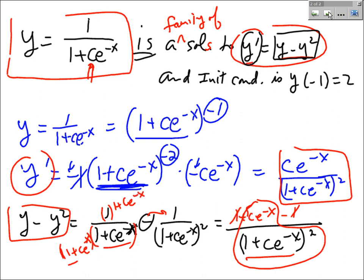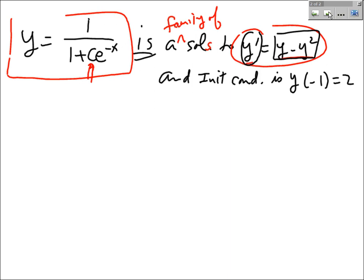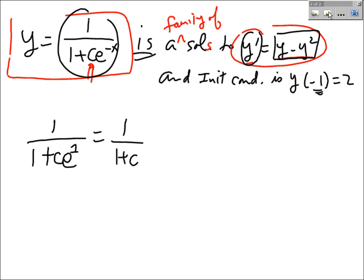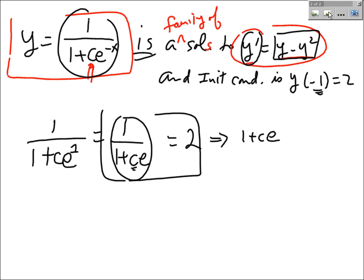When you have an initial value condition, you can usually find the value of c. Plugging in x equals negative 1: y of negative 1 equals 1 over (1 + c·e^(−(−1))) equals 1 over (1 + c·e). This is supposed to equal 2. Taking the reciprocal of both sides: 1 plus c·e equals one half.